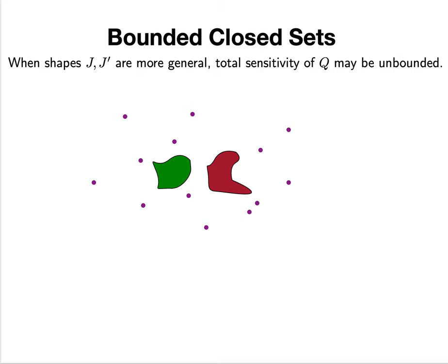Typically the sensitivity sampling framework had not been used on the difference between two objects, just on recovering a single object. Let's move to a more general setting with bounded closed sets.